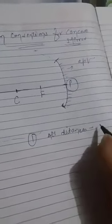What are the sign conventions for concave mirror? See Raji. First of all, keep one thing in your mind that all distances are measured from pole. All the distances are measured from pole which is as origin.